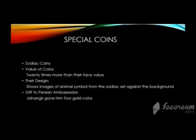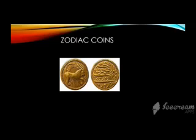Zodiac refers to the position of stars, the moon, and different planets. At that time, these coins were actually having much more value than the amount written on them. But later on, their circulation was stopped by Jahangir because they had pictures of animals on them which were un-Islamic. Emperor Jahangir replaced them with large coins and also gifted a few coins to the Persian ambassador, which were quite heavy in weight.